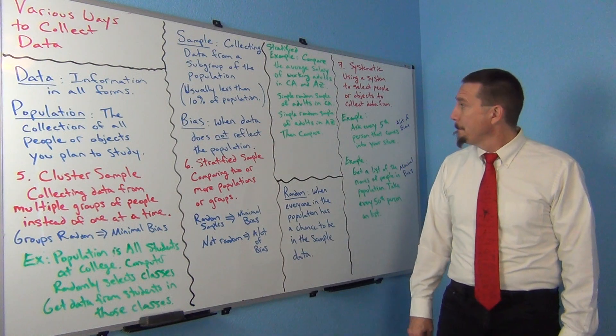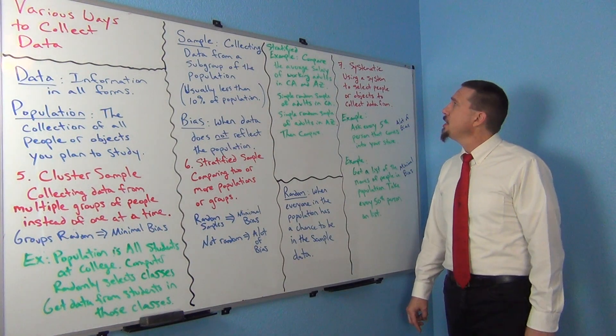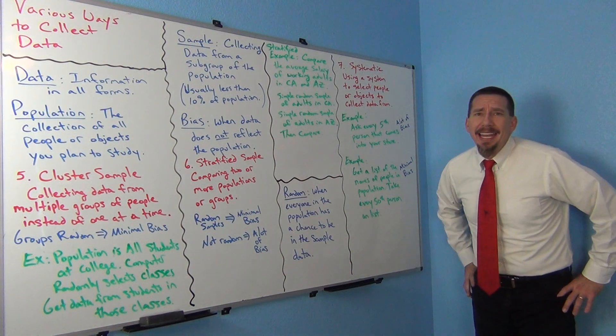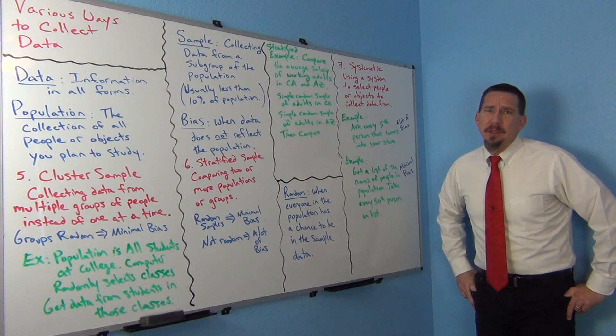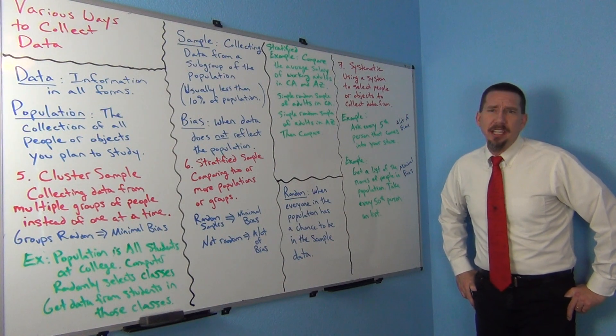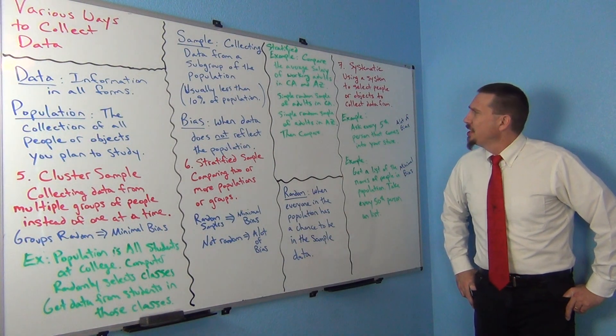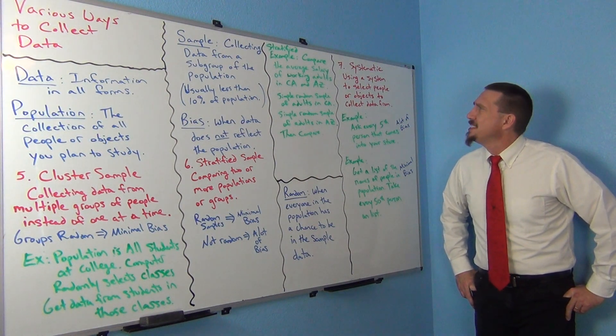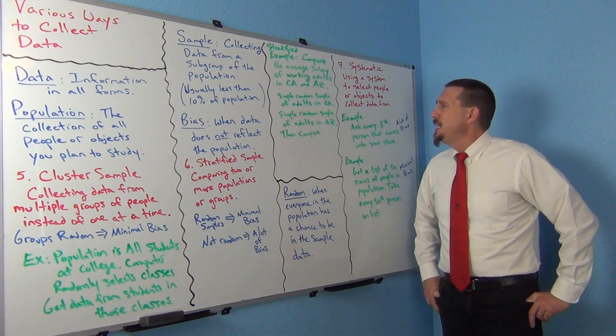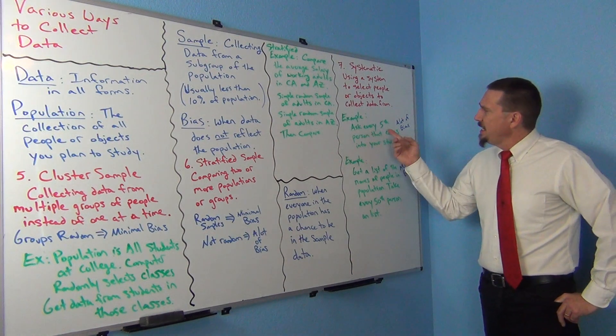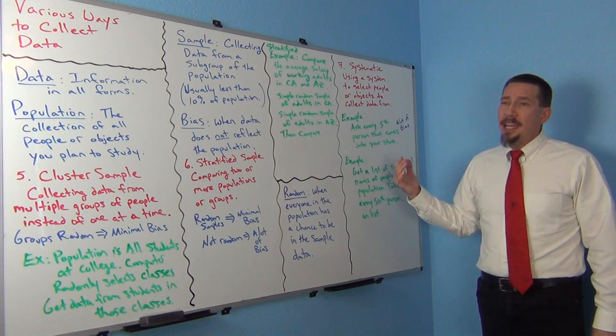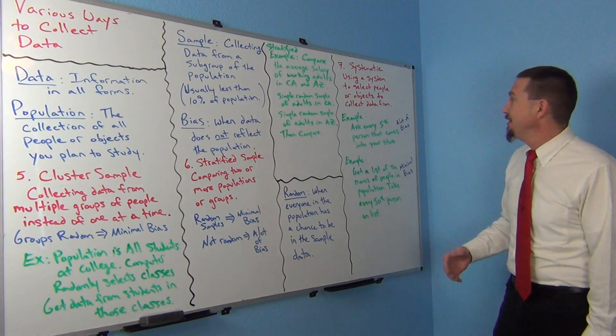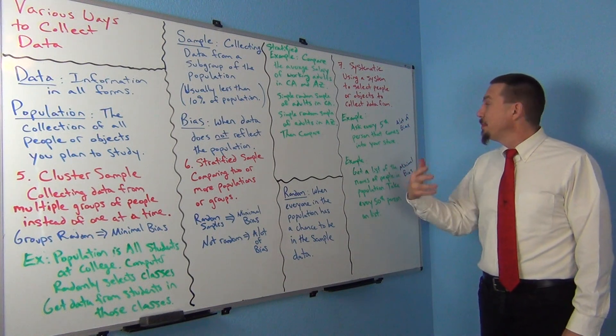All right let's look at the last one. So our last method is called systematic. This is where you use a system of some kind to select people or objects to collect data from. So you're collecting a sample but you're using some kind of system. It wasn't a random sample necessarily, it was some kind of system. So examples like you might see people in a business might tell their employees, hey every fifth person that comes into the store today ask them this question. So you're basically every fifth person that comes in your store.